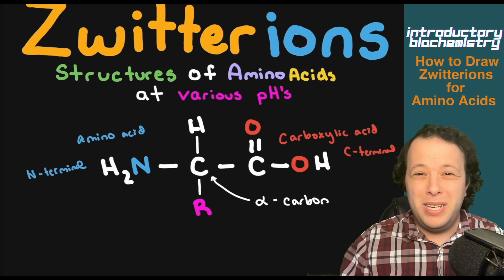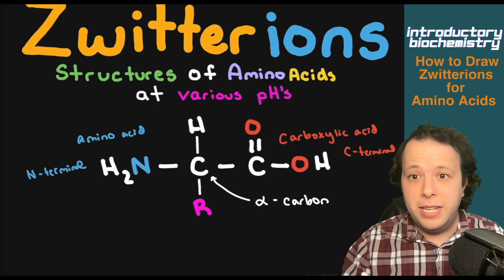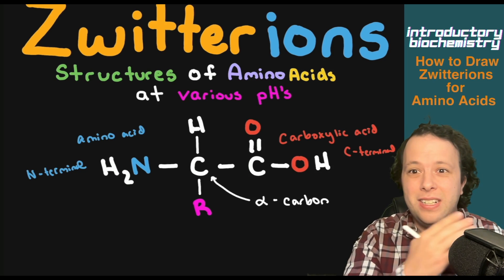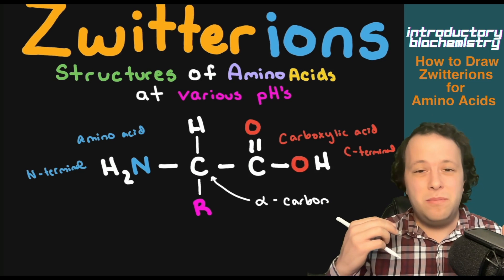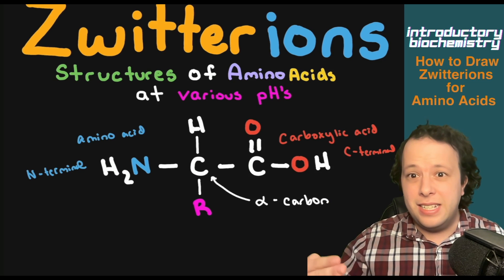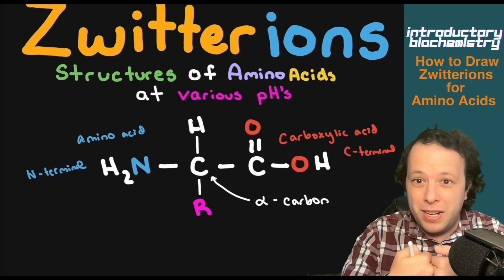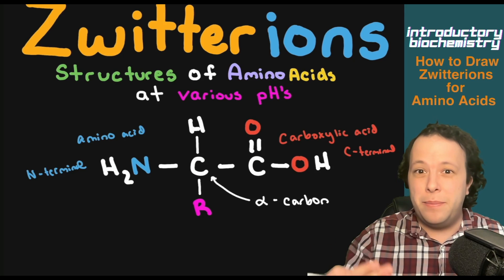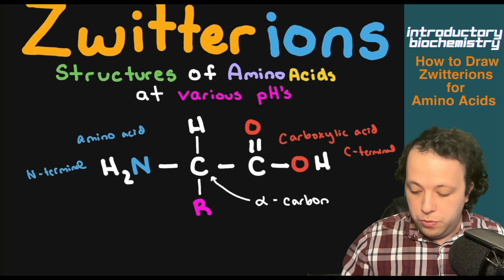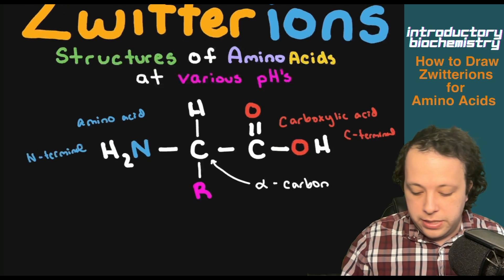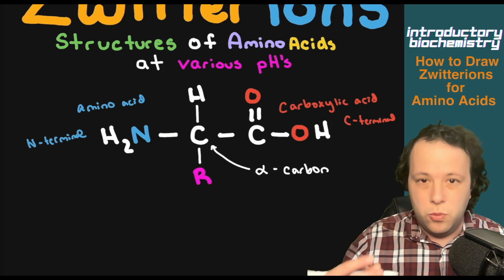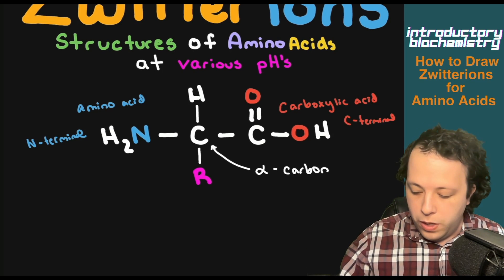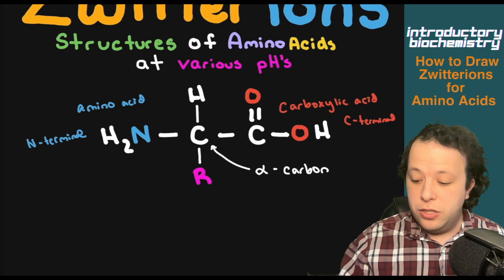Every single amino acid occurs in that order from left to right — the amino group on the left — and then it goes N-C-C every time as they bond in proteins to make a polypeptide chain. So now, how do we look at this in the body? What is going to be changing in this structure?